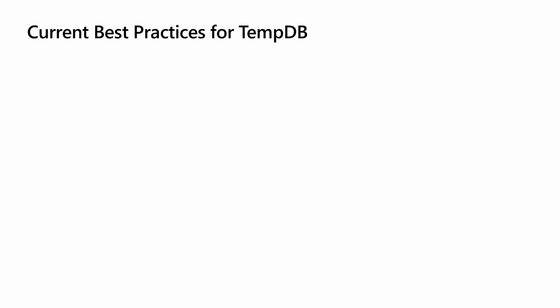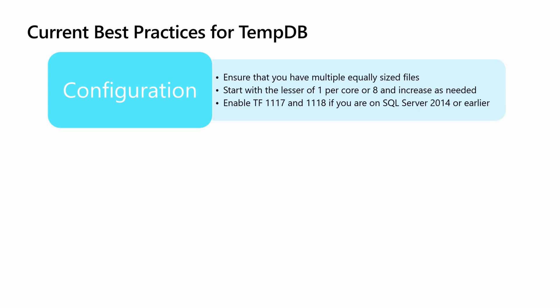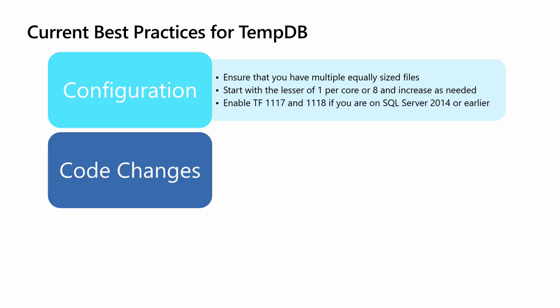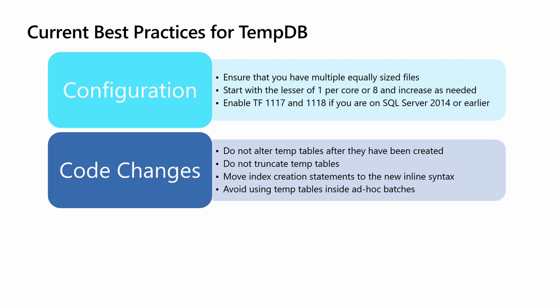There are a few things you can do today to help alleviate some of that contention. First, make sure that TempDB is configured properly — you want to have multiple equally sized files. If you're in SQL Server 2014 or earlier, make sure that you have trace flags 1117 and 1118 enabled. You can also make some changes to your code to help encourage temp table caching. The main thing is to not alter a temp table after it's been created — any time you alter a temp table after creation, we can't use the cache and we end up having to do a lot more creating and dropping. For example, don't create an index after the table's been created, because that's an alter and will cause the cache not to be reused.